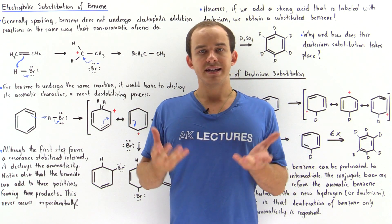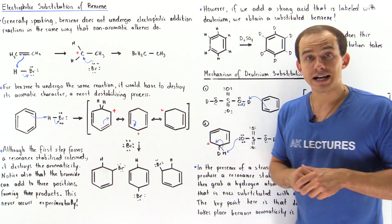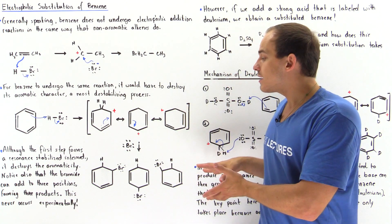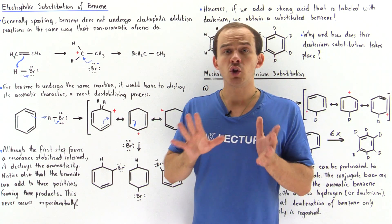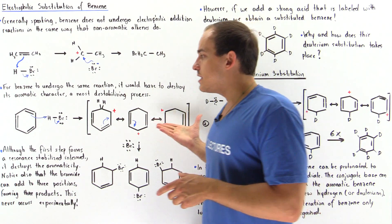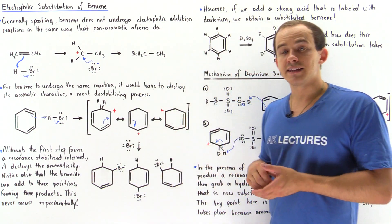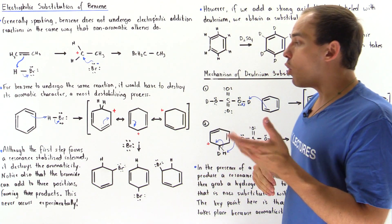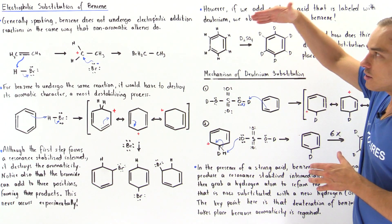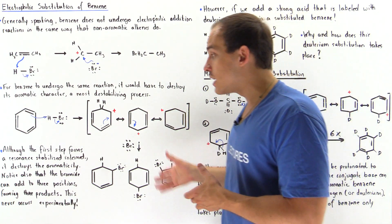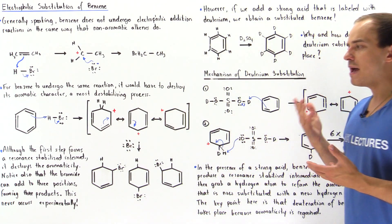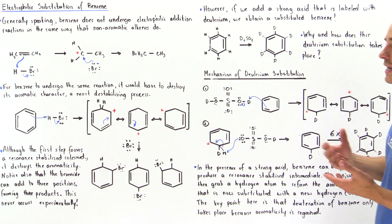However, when we examine one of the products of electrophilic addition, aromaticity is lost — the product is no longer fully conjugated, and that is not a stabilizing outcome. This reaction is not very favored kinetically; it has a very high activation energy. Although the first step forms a resonance-stabilized intermediate, the overall process of electrophilic addition destroys aromaticity, making it very unlikely to occur.